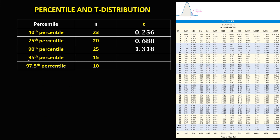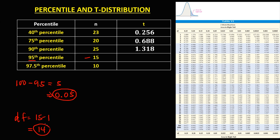For the 95th percentile, we have 100 minus 95 equals 5. Then to change this one to decimal, that's 0.05. This is now the area to the right of this 95th percentile. For the degrees of freedom, we have 15 minus 1, so the degrees of freedom is 14. With 0.05 and degrees of freedom 14, therefore the t-value is 1.761.